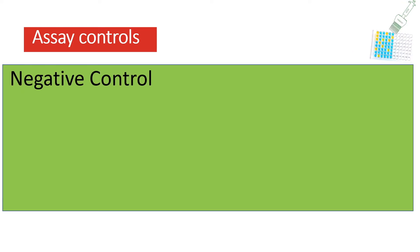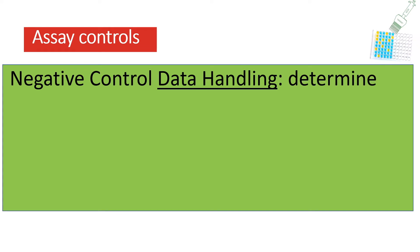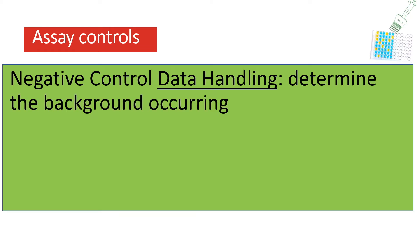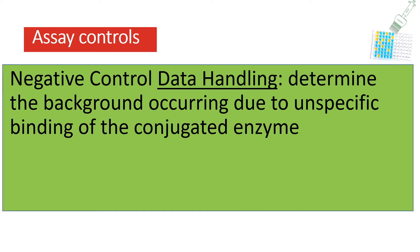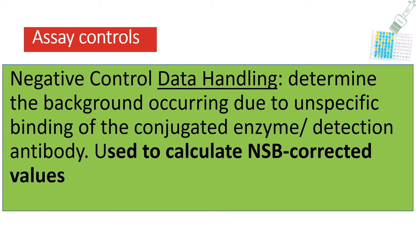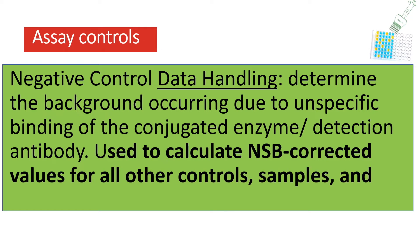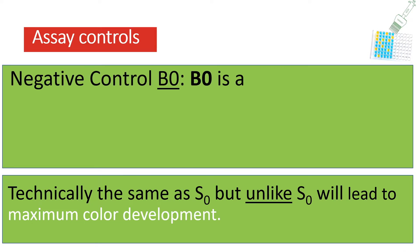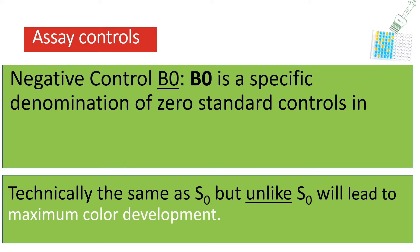In a sandwich ELISA this is called a negative control, but in a competitive ELISA it's called a non-specific binding well — designated as an NSB well or NSA (non-specific activity) well. In this well you omit the antibody, so you don't expect a result, and if you do get one you know something went wrong in your assay.